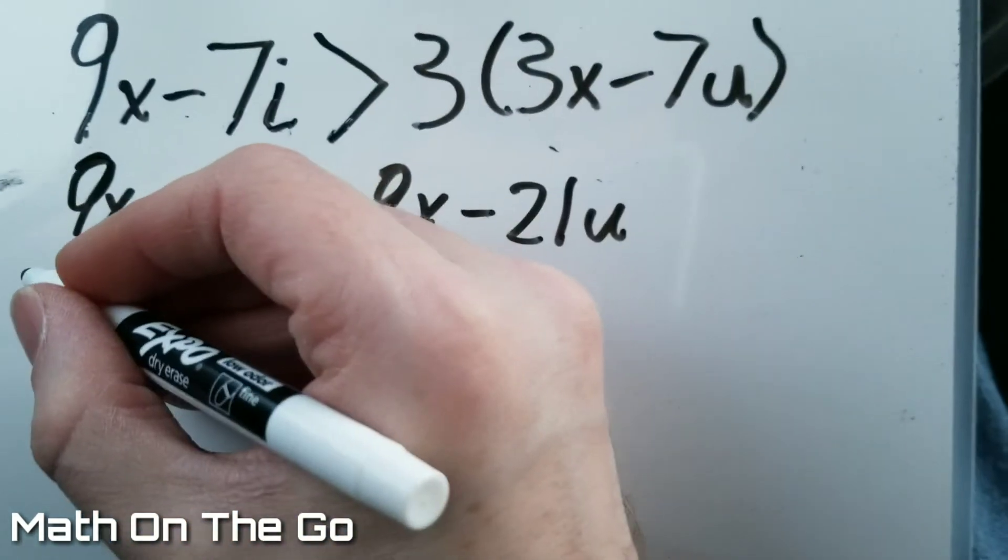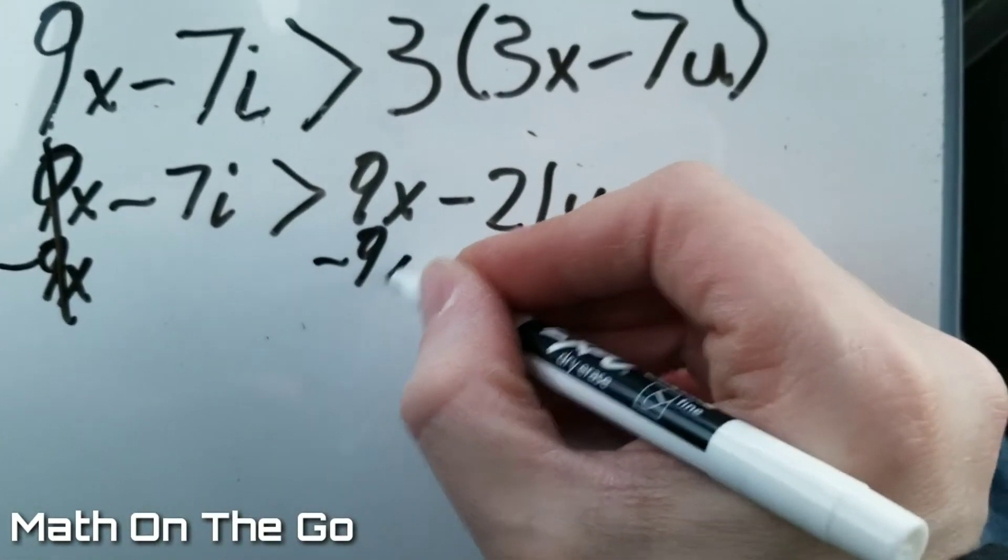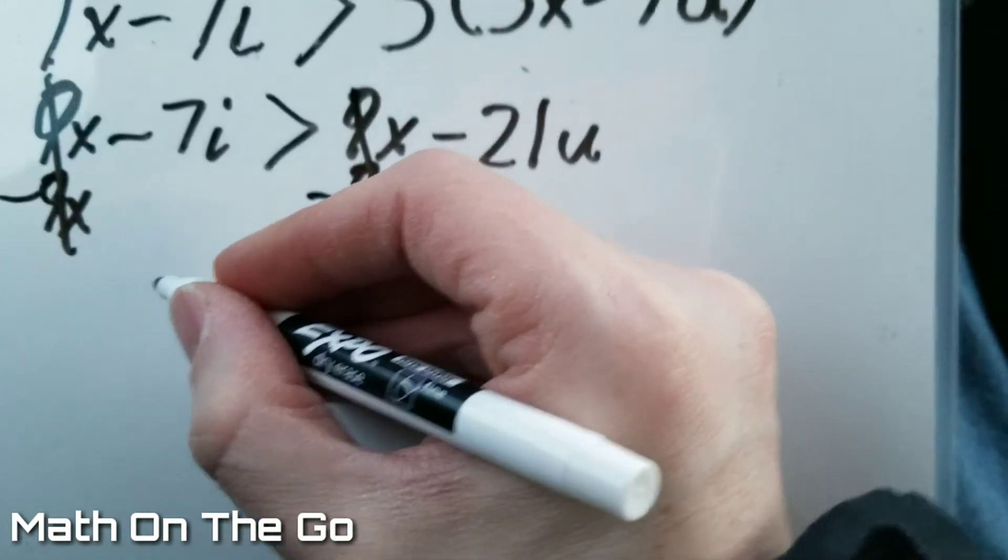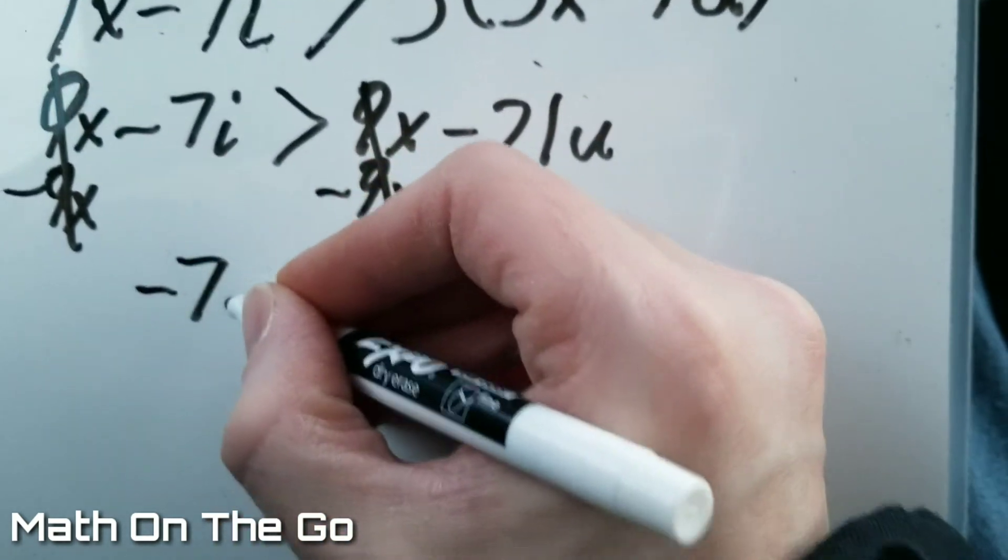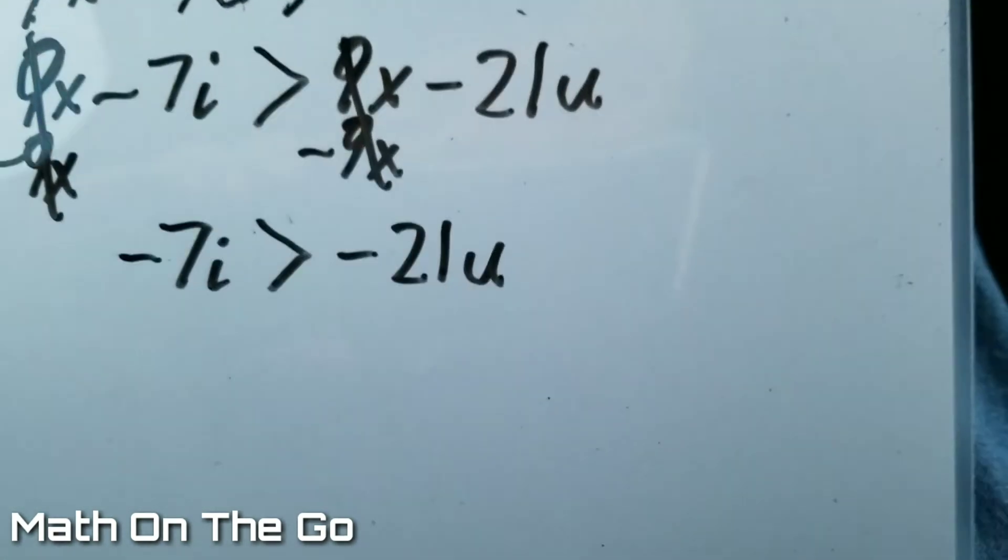Now we're going to subtract both sides by 9x. So that leaves us with negative 7i is greater than negative 21u.